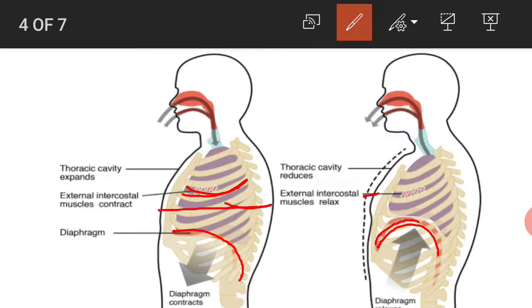As the diaphragm relaxes and regains its dome shape, the space in the chest cavity reduces. This increases the pressure on the lungs, the lungs contract, and air is expelled out of the lungs.